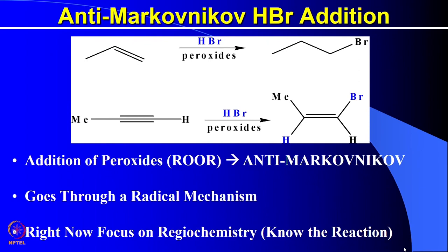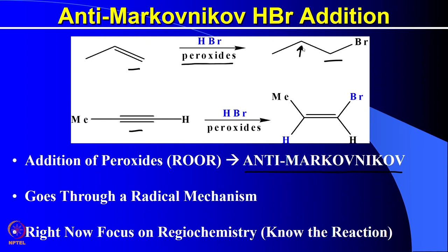When you add HBr in the presence of a peroxide to a double bond or triple bond, something different happens. This reaction proceeds through a radical mechanism instead of a carbocation mechanism and results in an anti-Markovnikov product. In Markovnikov addition the bromine would come to the more substituted carbon, but here, due to the radical mechanism, bromine gets added to the terminal carbon atom and we get the anti-Markovnikov product.